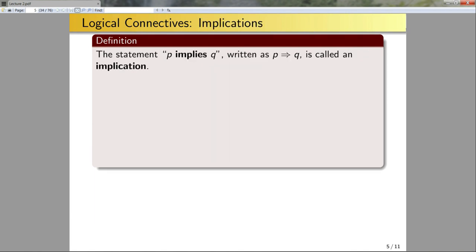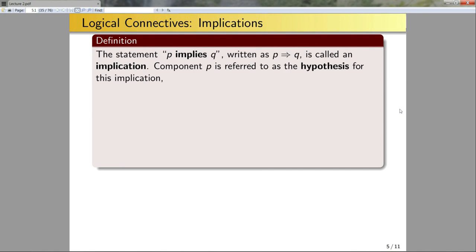Now let's look at another logical connective: implications. The statement P implies Q, written symbolically as P→Q, is called an implication. The component P is referred to as the hypothesis of the implication, and the component Q is referred to as the conclusion.